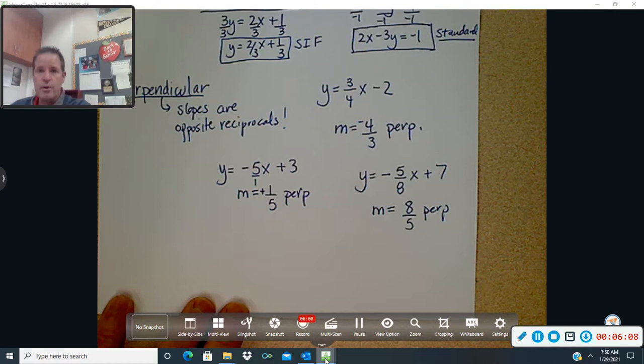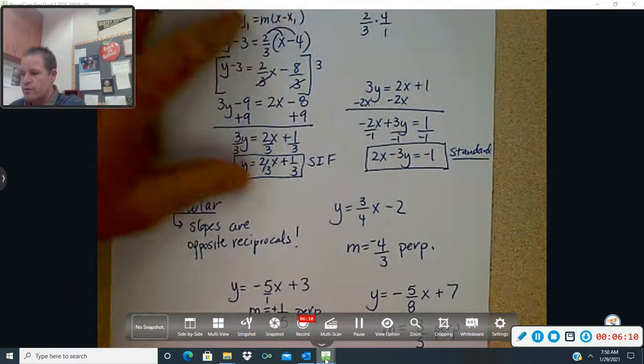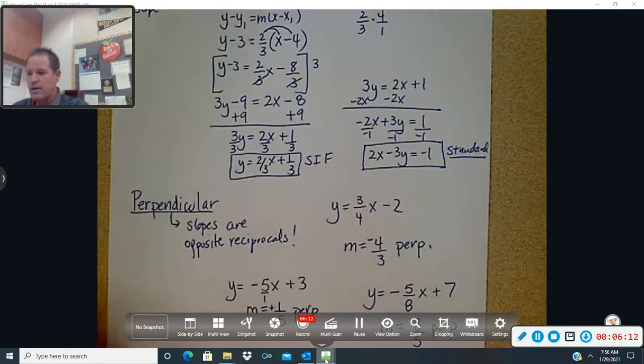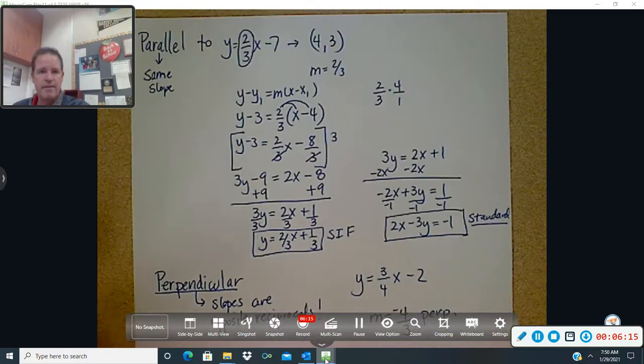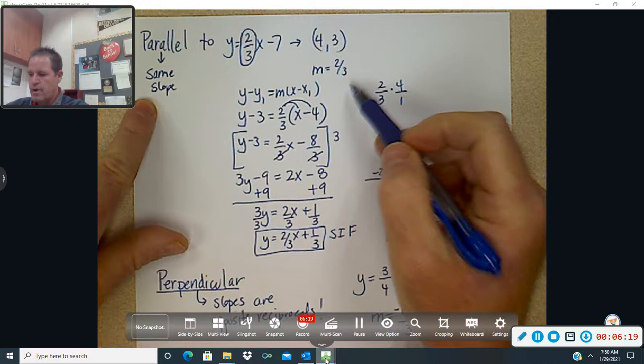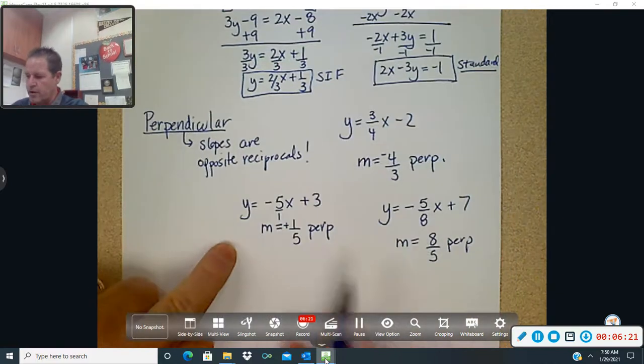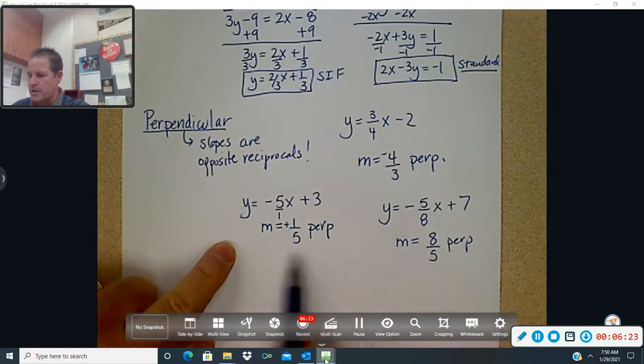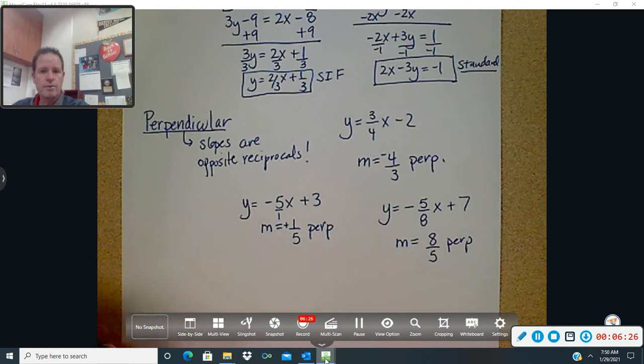And then if you were supposed to put it in slope interceptor standard form, you'd do the exact same work as what we did up here for parallel. Just again, the difference is when I have parallel, it's the same slope. When I have perpendicular, it is opposite reciprocals for the slope. Slopes are opposite reciprocals.